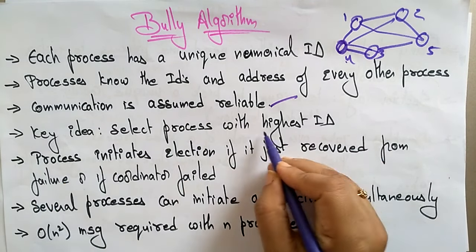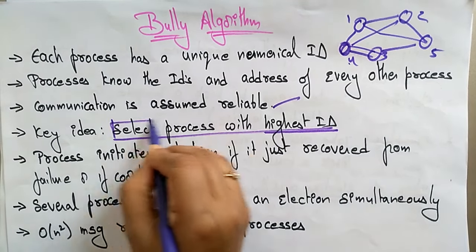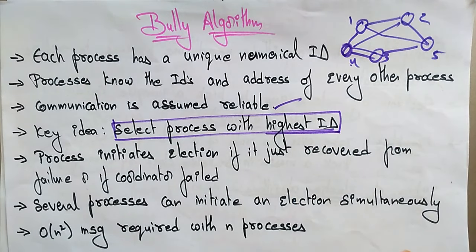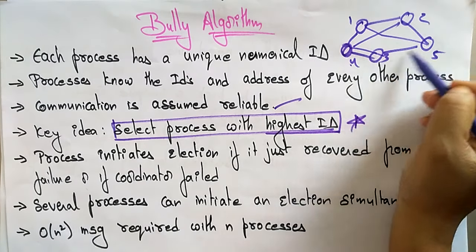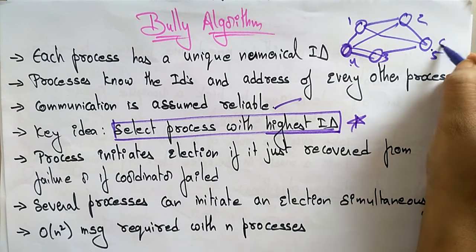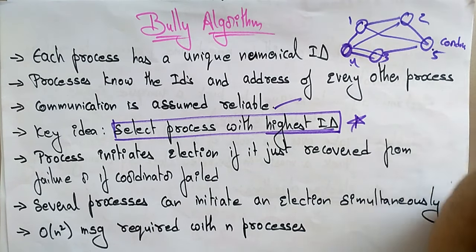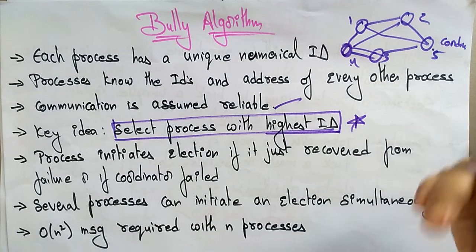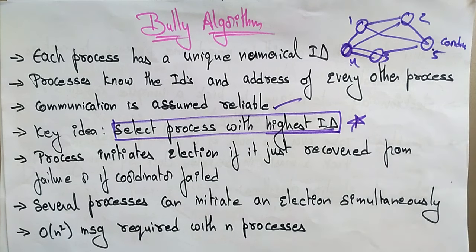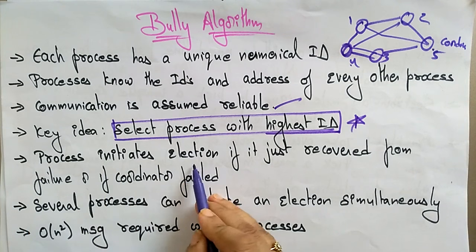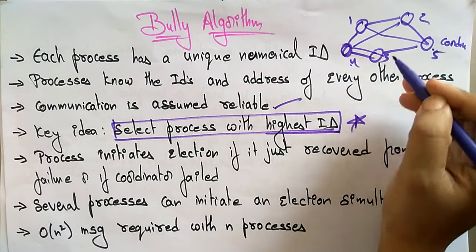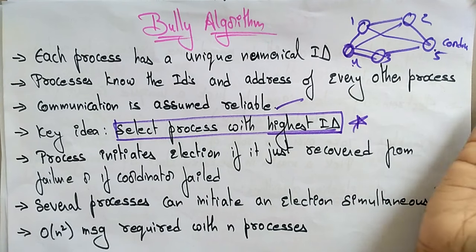The main key idea of the bully algorithm is to select the process with the highest ID. For example, if process 5 has the highest ID, it becomes the coordinator. That is the main concept. But how do we know if that process is active or inactive?